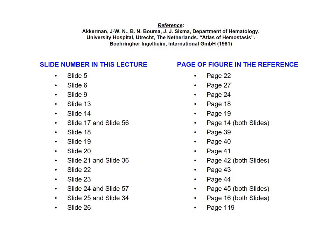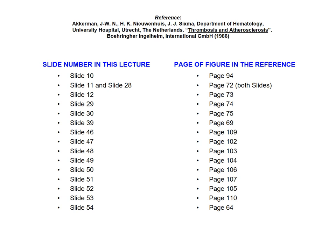The slides I use in this lecture come from two books. One book is Atlas of Hemostasis, where I show you the slide number of the lecture and the respective page of the figure in the reference book. The second book has the title Thrombosis and Atherosclerosis, and again I show you the slide number in this lecture and the respective page of the figure in the reference book.